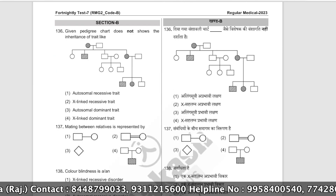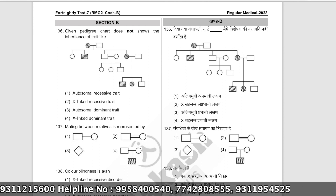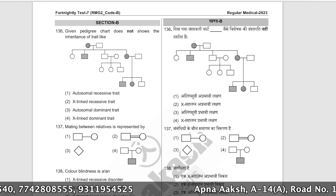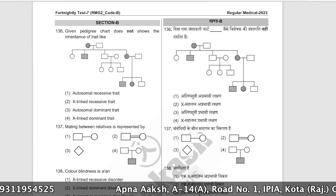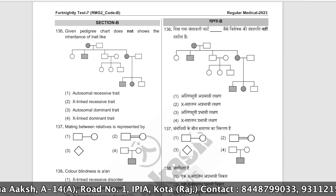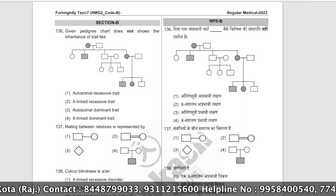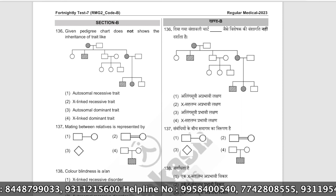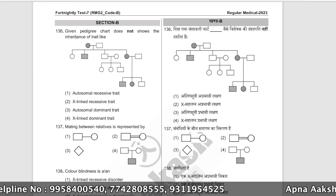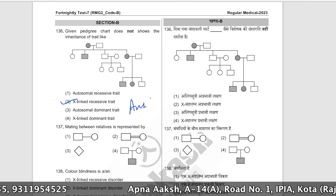The given pedigree chart does not show the inheritance of which type of trait? Looking at the pedigree, the trait passes from female to male and also to female, so it is autosomal — not X-linked. The trait appears in every generation suggesting dominance, so it is not recessive. The correct answer is option number two — X-linked recessive.